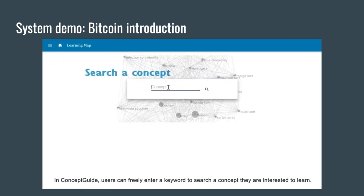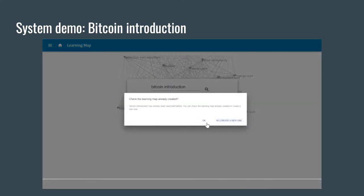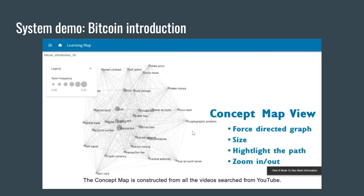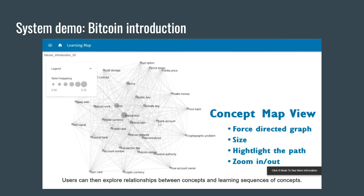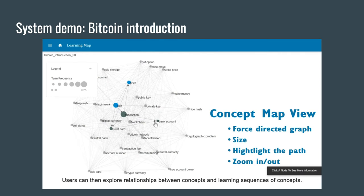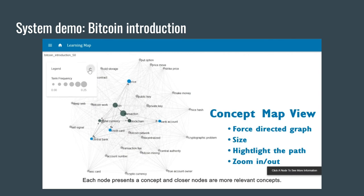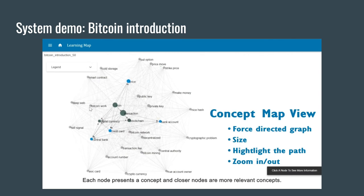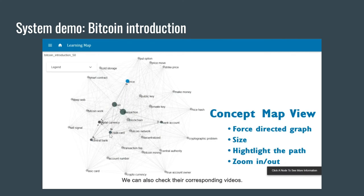Here is the demo of our system. In Concept Guide, users can freely enter a keyword to search and learn about a topic they are interested in. The result is visualized as a concept map-based view. Using Bitcoin as an example, the concept map is constructed from the transcripts of top YouTube videos. Each node represents a concept, and closer nodes are more relevant concepts.